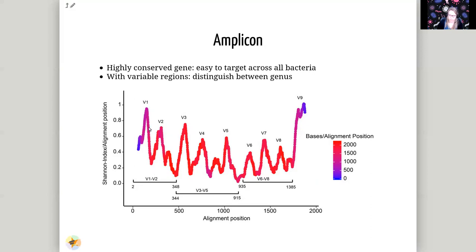Often you sequence across several of these variable regions — V1 through V9. You might sequence V1 and V2, or V3 through V5, or V6 through V8. Typically you don't sequence the entire gene but one or more of these variable regions. This allows you to distinguish microbes, though usually you can't go further than genus level — you can't reach species-level differentiation — but genus-level resolution is very doable, and for many use cases this is enough.